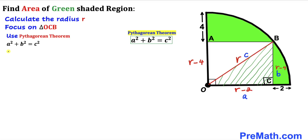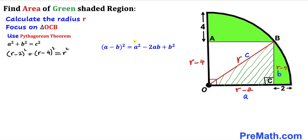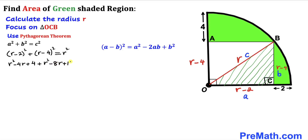So the equation becomes: (R minus 2) squared plus (R minus 4) squared equals R squared. Applying the identity (A minus B) squared equals A squared minus 2AB plus B squared, we get: R squared minus 4R plus 4, plus R squared minus 8R plus 16, equals R squared on the right-hand side.